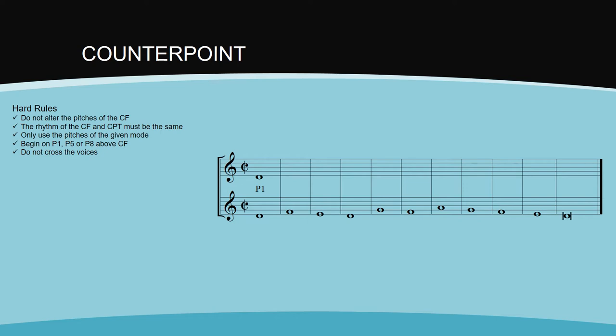Let's try out the other options. Both the perfect fifth and perfect octave are viable options. Neither of these options will overlap nor cross with the next pitch in the cantus. Let's try the perfect fifth and see where that takes us.